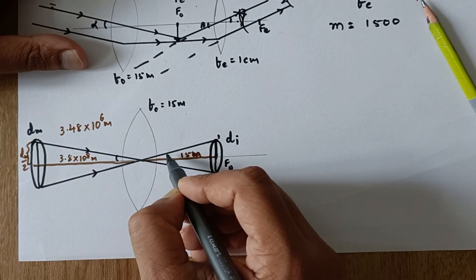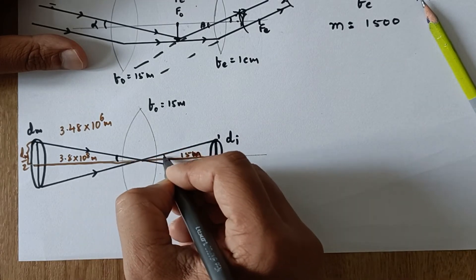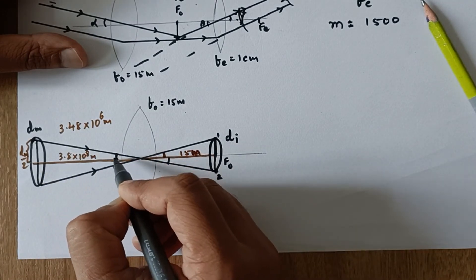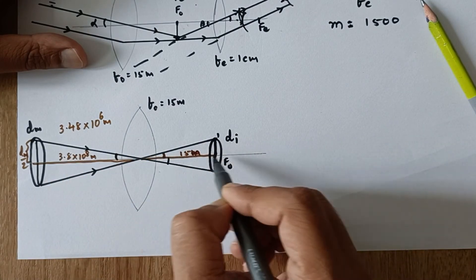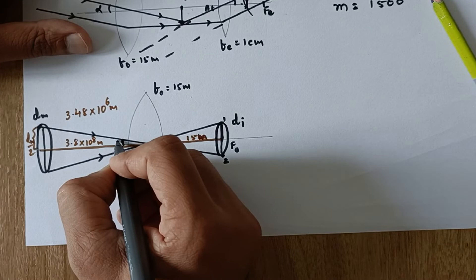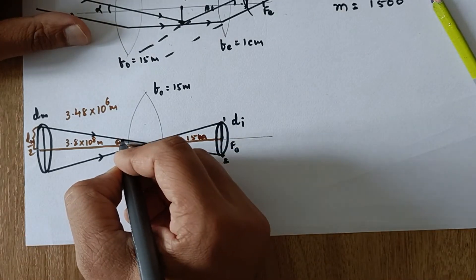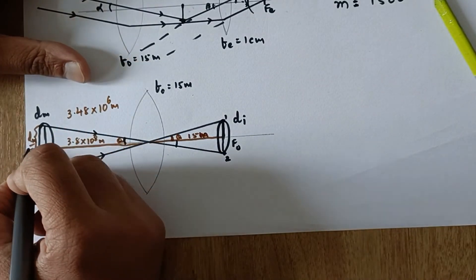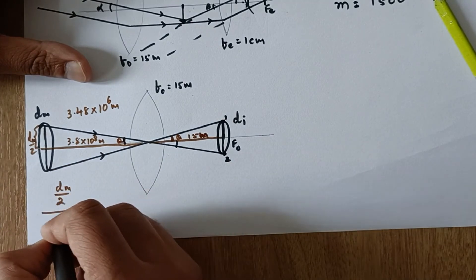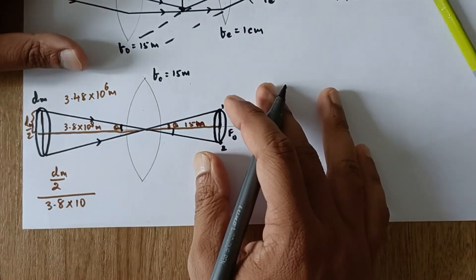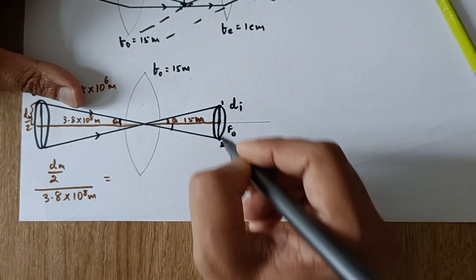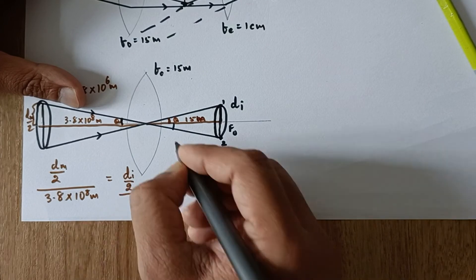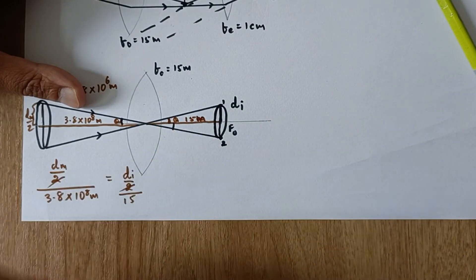If you look carefully, if this angle and this angle are equal, then half of their angles are also equal. Then this triangle and this triangle, I can equate since these two angles are equal. So tan theta of this triangle and tan theta of this triangle will be same. So tan of this angle, if this is theta, this is also theta because this is 2 theta, 2 theta. So tan theta from here will be equal to dm by 2, half of the diameter divided by this distance, 3.8 into 10 raised to 8 meters. That is equal to dI by 2, the diameter of the image by 2 divided by this distance that is 15. This 2, 2 goes away.